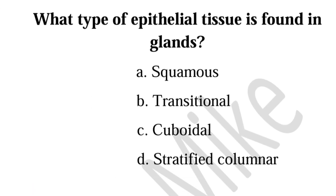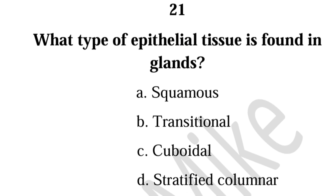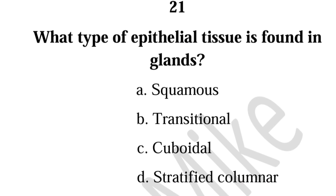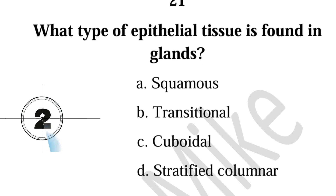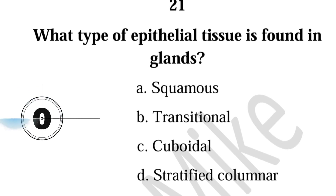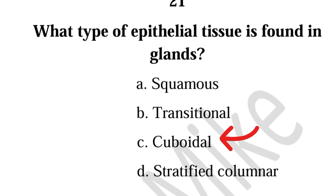Twenty-one, what type of epithelial tissue is found in glands? Cuboidal.